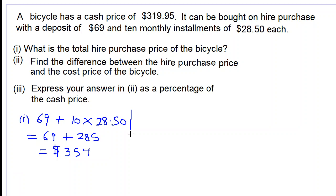That's part number 2 now. Find the difference between the hire purchase price and the cash price of the bicycle. We take $354 and subtract $319.95.